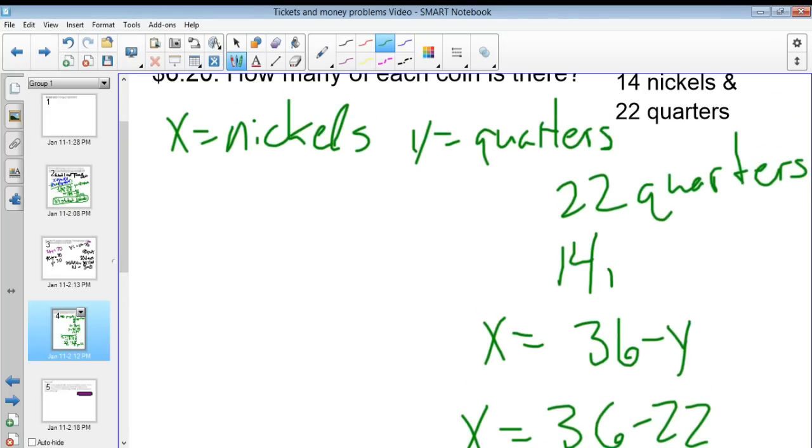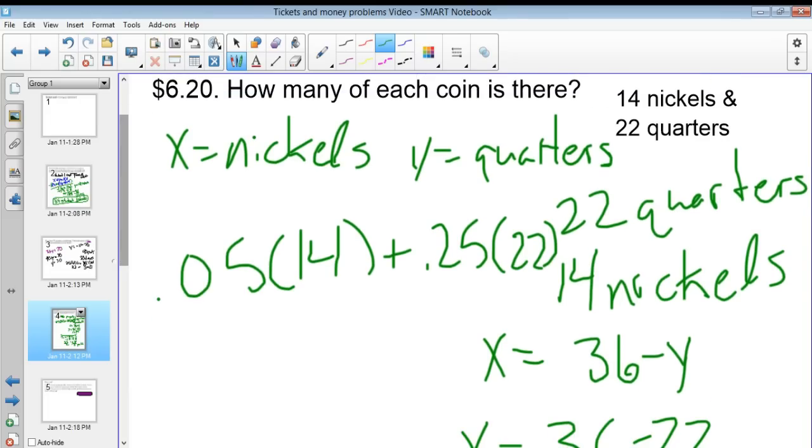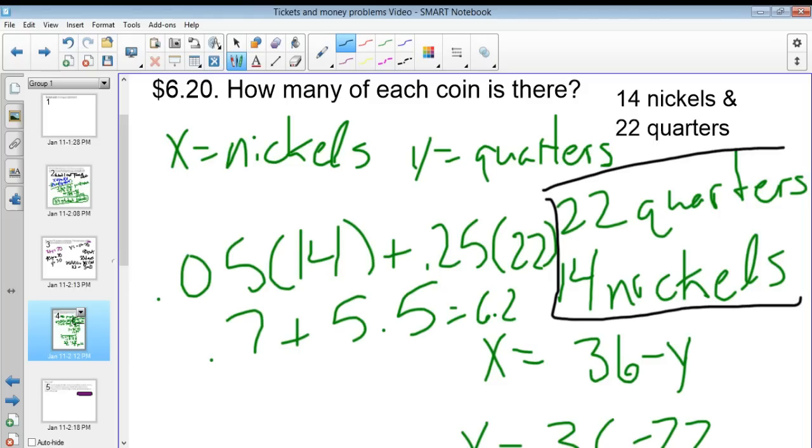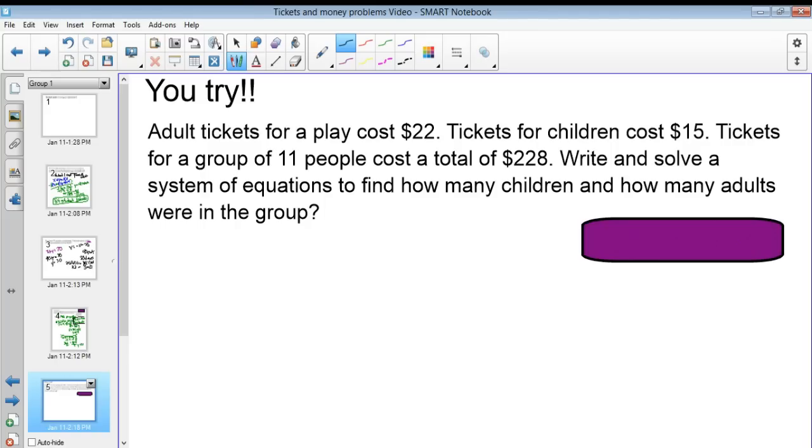So 14 nickels. And if I wanted to check here, I could say 0.05 times 14 plus 0.25 times 22, and let's see if that actually equals $6.20. So 0.05 times 14 is equal to 0.7, and 0.25 times 22 is equal to 5.5. Adding those together does indeed give me 6.2. So there we go. We have 22 quarters and 14 nickels. And last problem, try it out, pause it, come back when you're done.